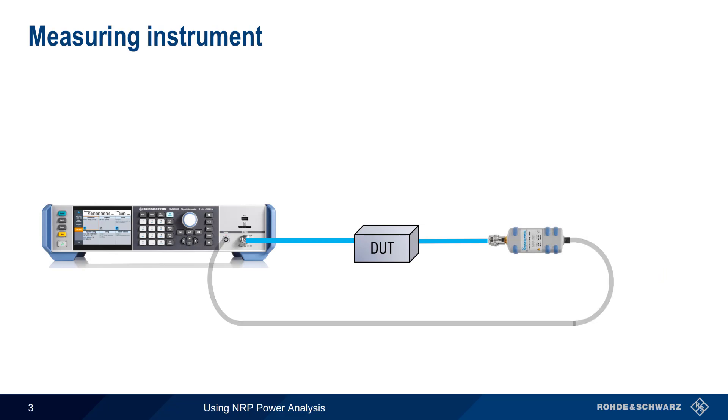In this case, the power sensor is directly connected to our signal generator. Our signal generator both controls and retrieves measurements from the sensor. Although this test setup is limited to scalar measurements, it can be used for a wide variety of applications.